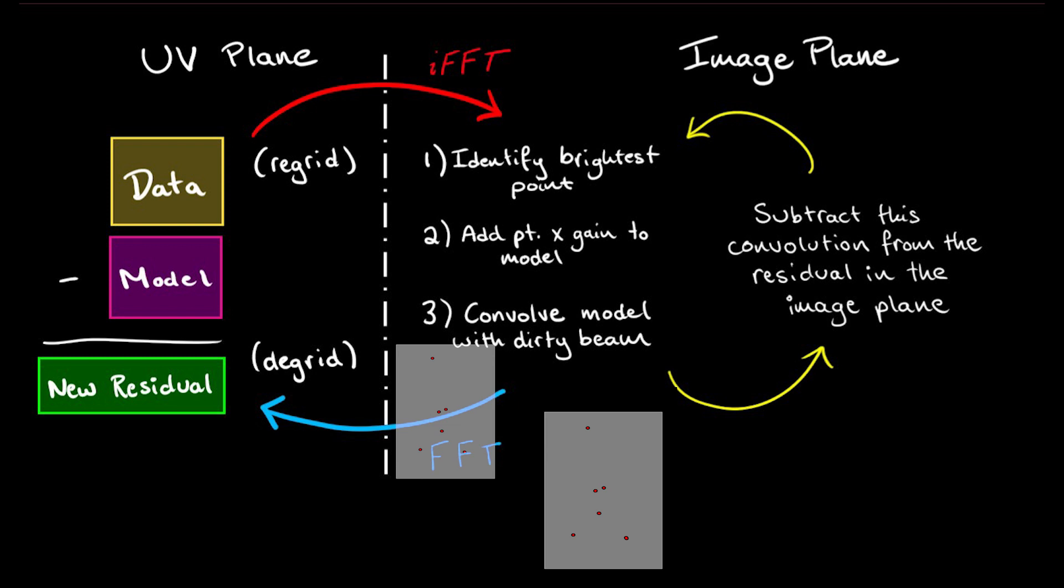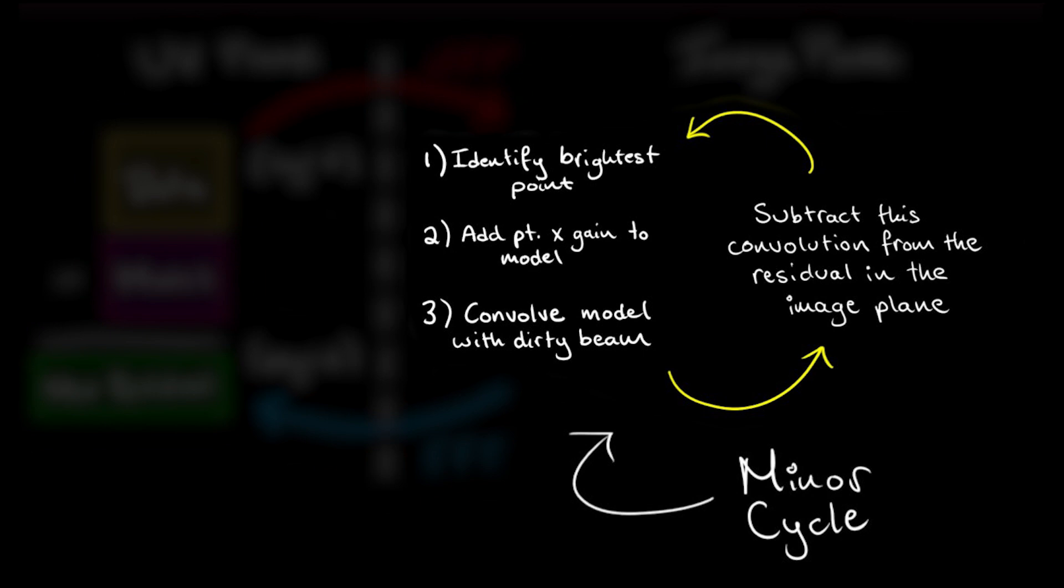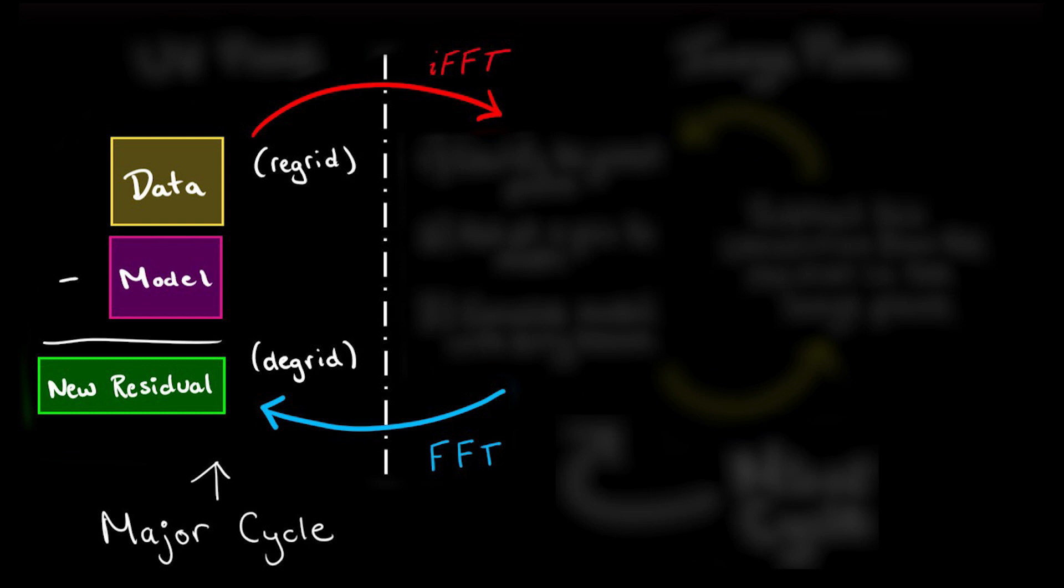This process thus uses two nested cycles. The deconvolution of the CLEAN components in the image plane is called a minor cycle, and every transformation from the UV plane and back to the image plane is called a major cycle.